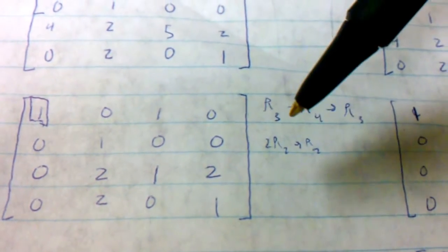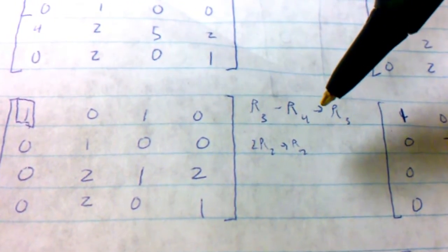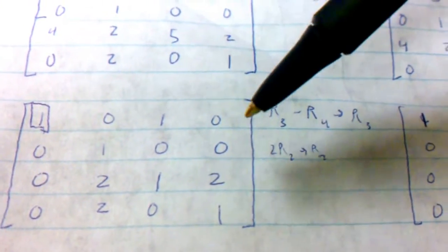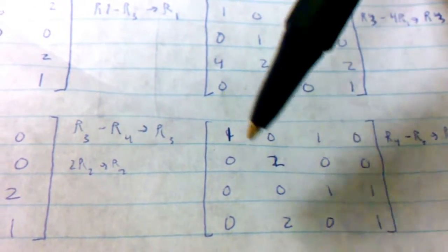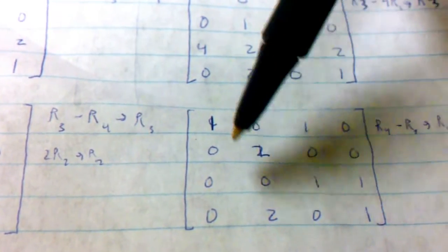So next we'll do row-3 minus row-4 would give us row-2, row-3, excuse me. And then we are going to double row-2. So we go right here, and you see the new row-3 has lost some of its values, and the second one is now a 2.